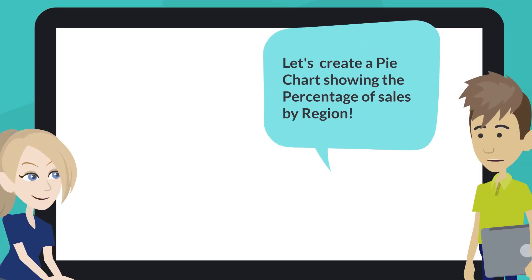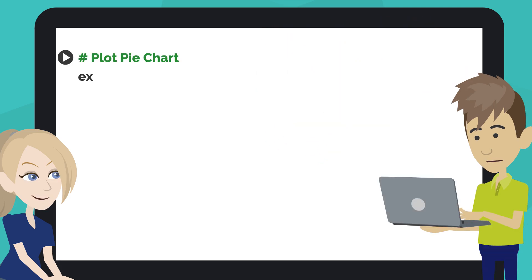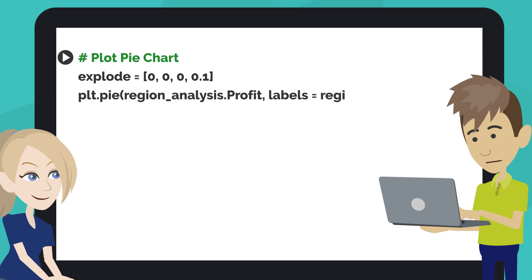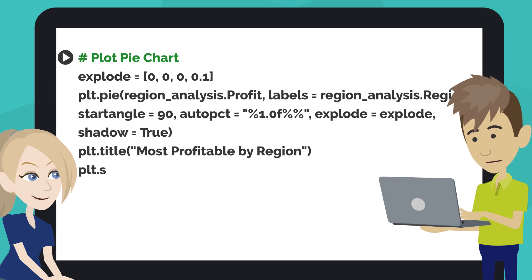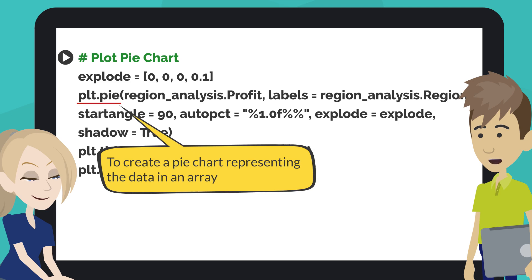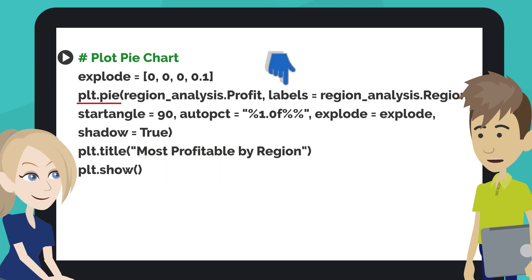Let's create a pie chart showing the percentage of sales by region. Type the code like this into the next code cell of your notebook. This code creates the pie chart for most profitable by region. Matplotlib pie function creates a pie chart representing the data in an array. The label parameter adds labels to the pie chart. The start angle parameter defines an angle in degrees. The auto PCT parameter labels the wedge with their numerical value.